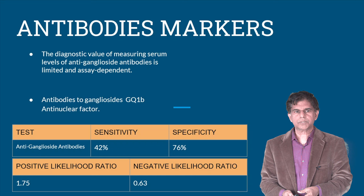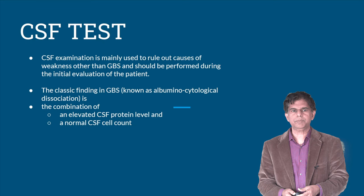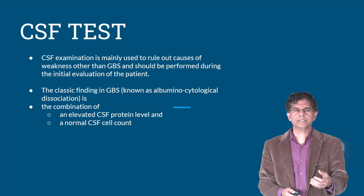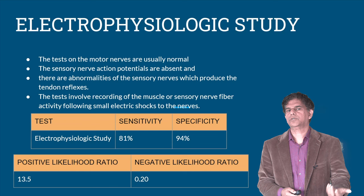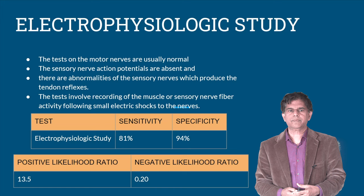CSF analysis is mainly used to rule out other causes of weakness besides GBS. The classic finding in GBS is albuminocytological dissociation — that is, an elevated CSF protein level combined with a normal CSF cell count. In electrophysiological studies, the tests for motor nerves are usually normal; however, sensory nerve action potentials are absent, reflecting abnormalities in the sensory nerves that produce tendon reflexes.